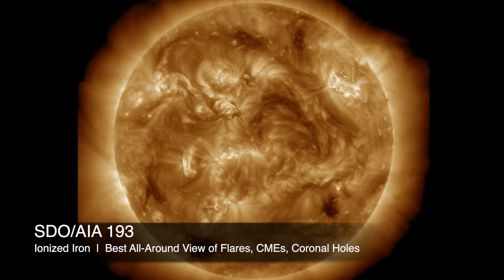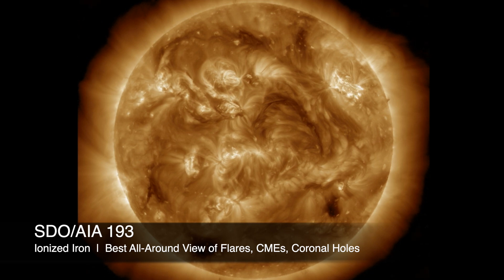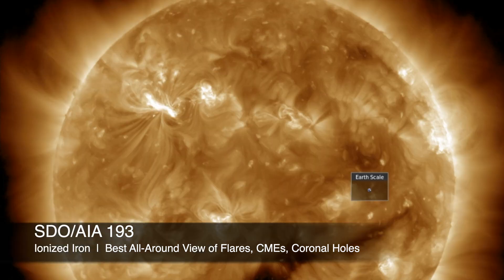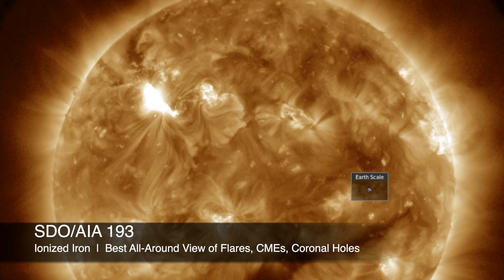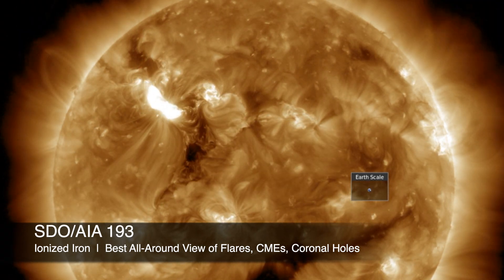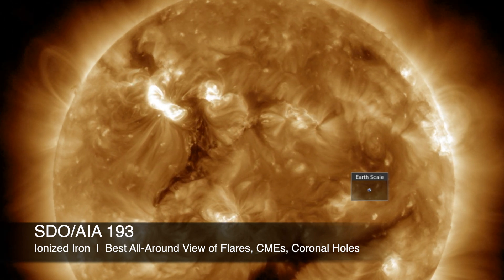But my favorite — the one we see here every day on this channel — is the bronze-colored 193 angstrom view. It is also ionized iron, and it is the best all-around wavelength to use. It shows umbral magnetic fields, flares, CMEs, filaments, and coronal holes.